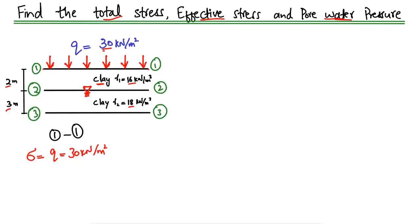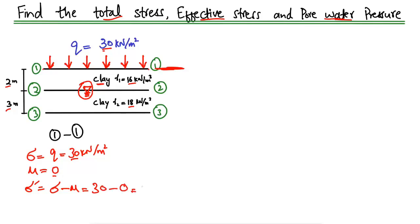The pore water pressure, represented by u, is equal to zero at point 1.1, because the water table is acting below point 2.2 — there is no water pressure developing here. The effective stress, represented by Sigma prime, equals total stress minus pore water pressure: 30 minus 0, which gives us 30 kilonewton per square meter as the effective stress at point 1.1.